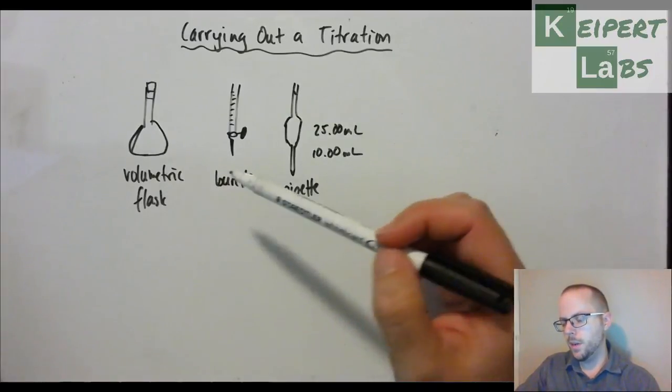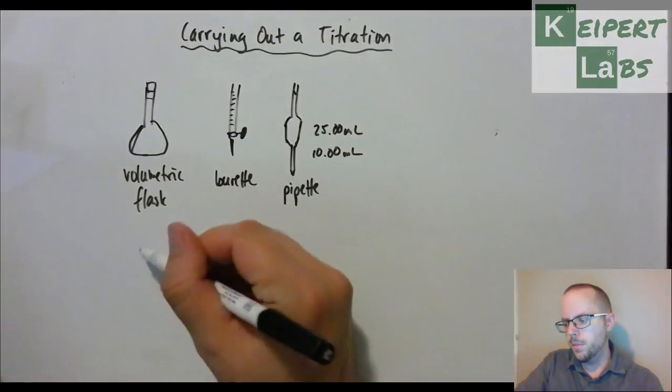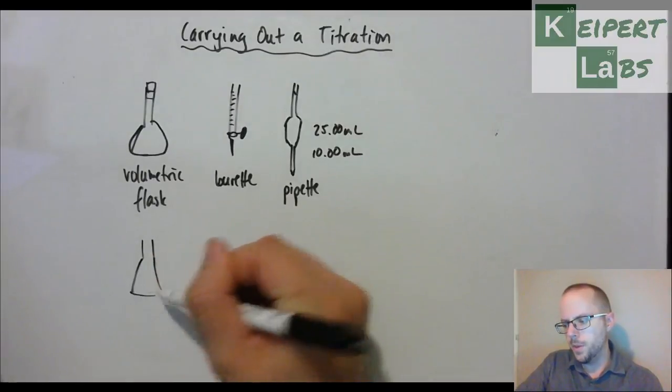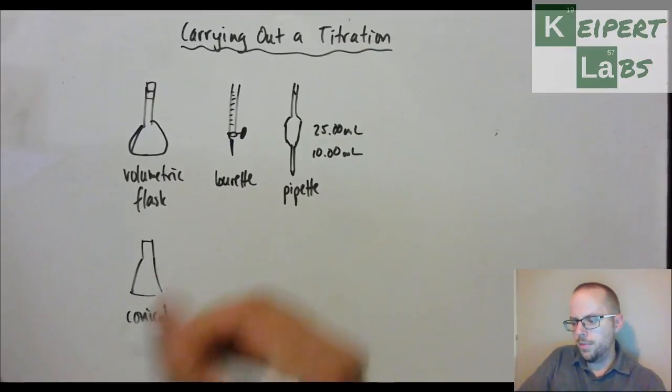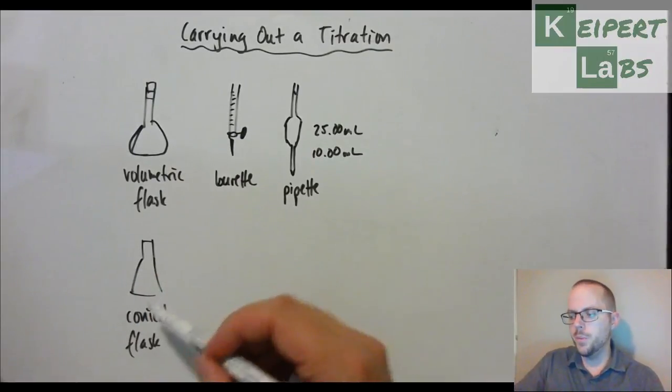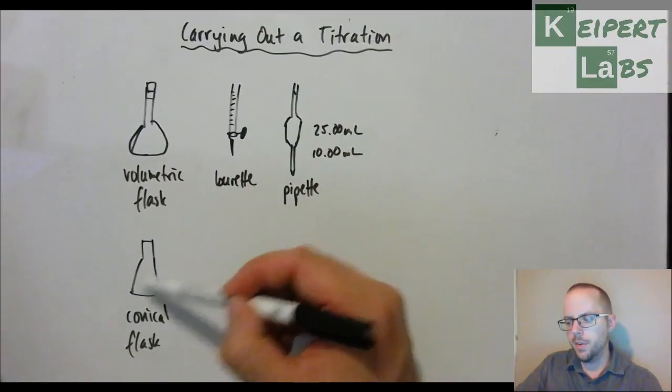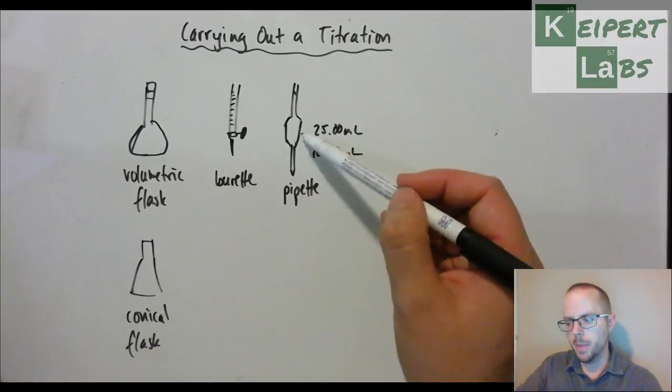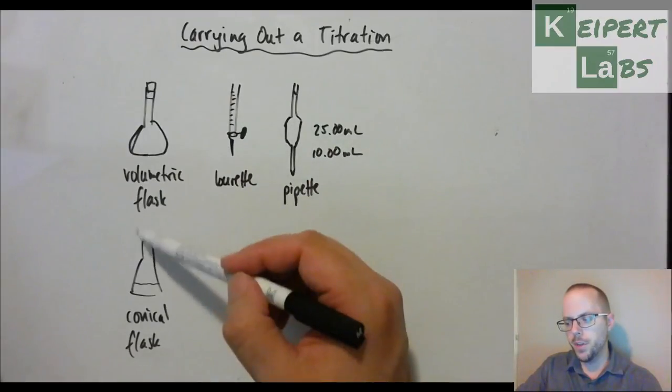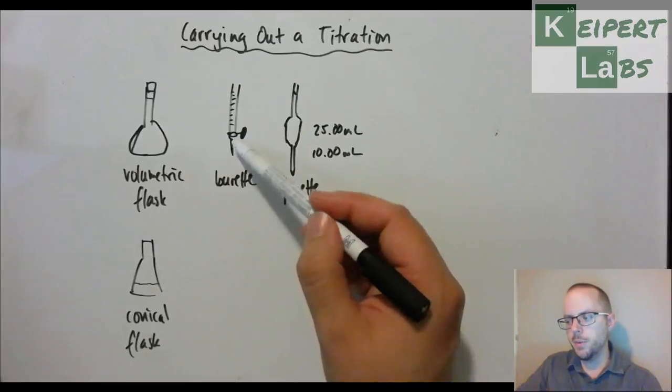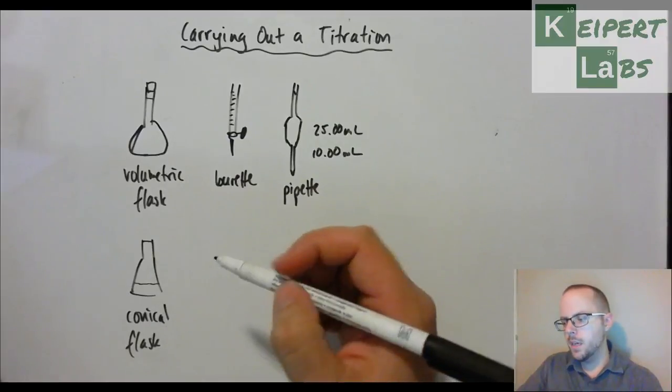So we've got a volumetric flask, a burette, and a pipette. Next we've got Old Faithful, hopefully a nice obvious one for you, our conical flask. We use our conical flask in combination with our burette to hold our two reactants. We've got one reactant in our flask and we've put a particular amount of it using a pipette in here. Then we put the burette and suspend it above the conical flask so that as we release the other reactant from the burette, it goes into the flask and reacts inside here.